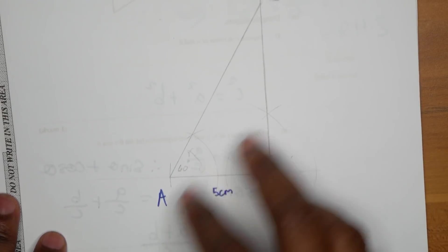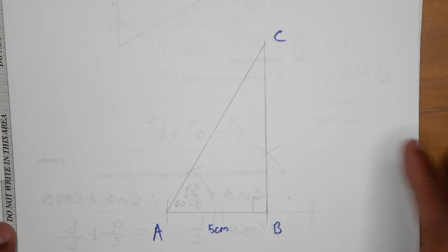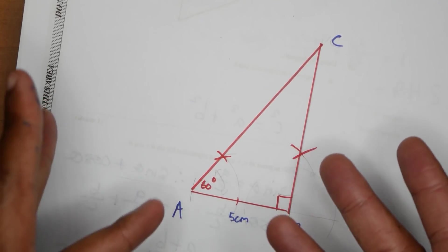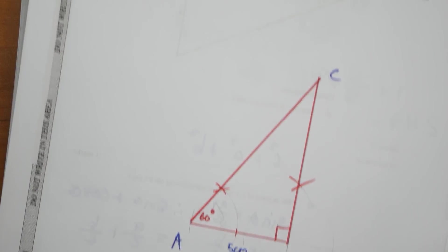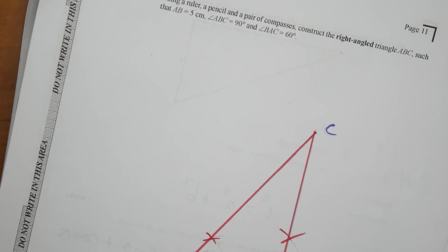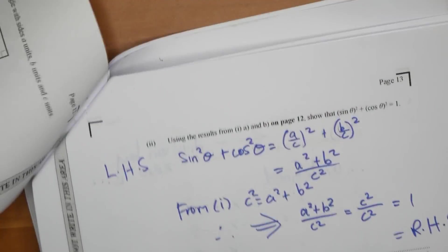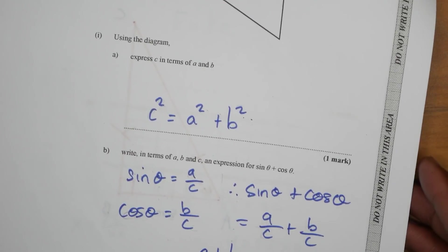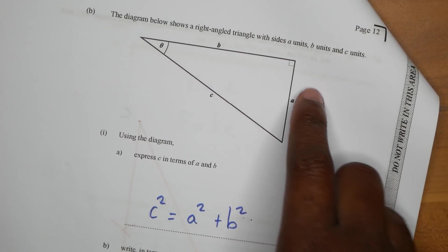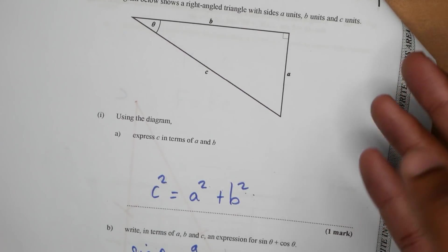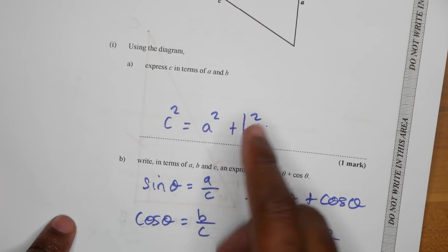Question three — you have your construction. I forgot to darken this but something like this — don't forget your little construction lines. This was really easy, I'd say three or four marks there. Then we had a next proof here that was like a trigonometric identity — almost A-Maths-ish, but it was laid out nicely.